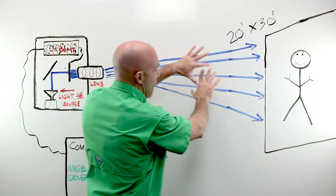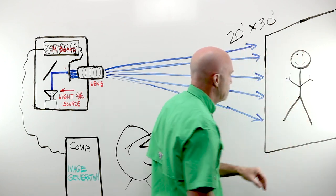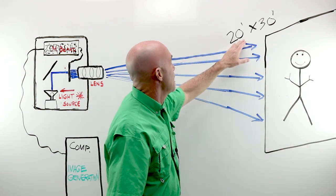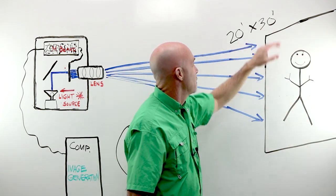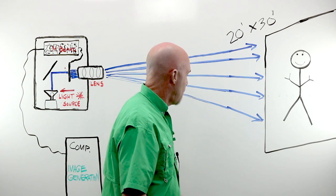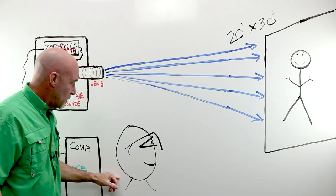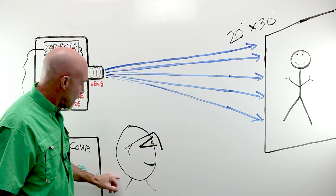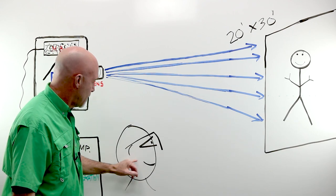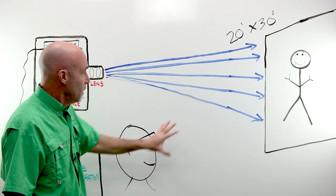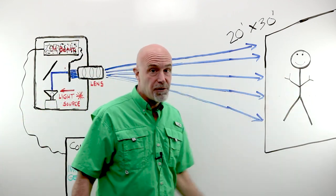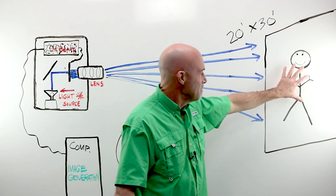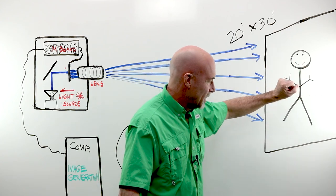Light passes out until it hits this beautiful, huge movie screen — 20 feet tall, 30 feet wide. You get to sit in the audience and munch on your $18 popcorn and sip on your $8 Coke while you're watching your favorite movie. So there's my screen. There's what I'm watching.